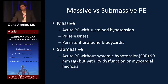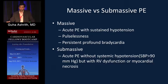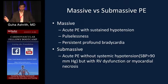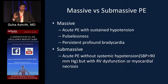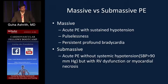When reviewing thrombolytic trials, three key terms appear: massive PE, submassive PE, and intermediate PE. Massive PE is defined by sustained hypotension, pulselessness, or persistent profound bradycardia from severe RV failure. Submassive PE involves acute PE without systemic hypotension but with RV dysfunction or myocardial necrosis.